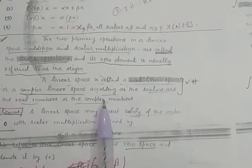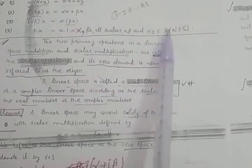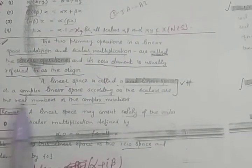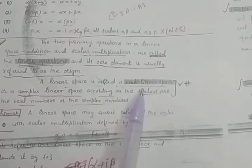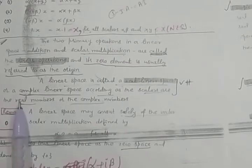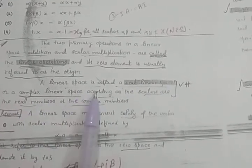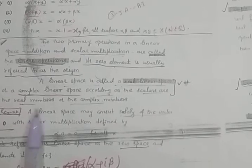A linear space is called a real linear space or a complex linear space according as the scalars are real or complex numbers. If scalars alpha and beta belong to real numbers, it is a real linear space; if they belong to complex numbers, it is a complex linear space.